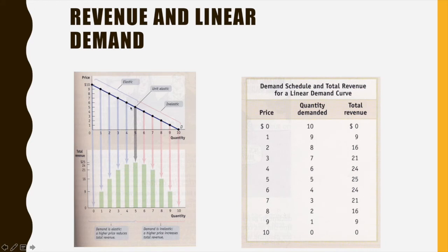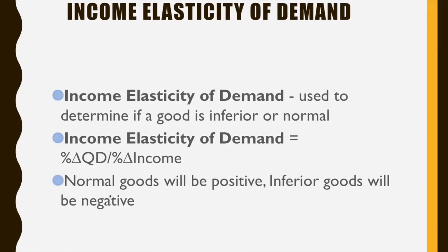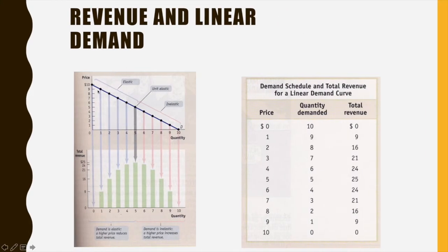For example, at $9 we sell one unit, giving total revenue of $9. If we lower the price to $8, we sell two units and total revenue goes up to $16. Total revenue rises through the elastic portion all the way to the unit elastic point — $5 and five units for a total revenue of $25. If we continue dropping the price — say from $5 to $4 — quantity rises to six units but total revenue starts to decline.